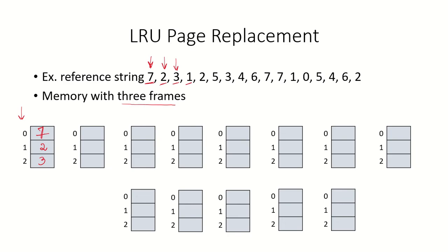The next reference is for page 1. We look backwards to see which page was not used in the recent past. Page 3 has been used very recently, page 2 has also been used very recently, but page 7 was used earliest compared to 2 and 3. So page 7 will be replaced. Page 1 causes a page fault and replaces page 7. The next reference is for page 2, which is already in memory — so this is a hit.